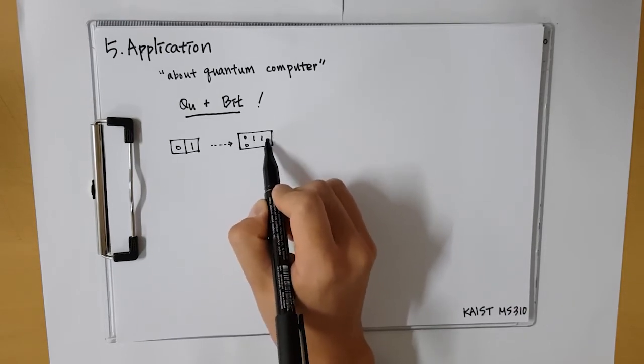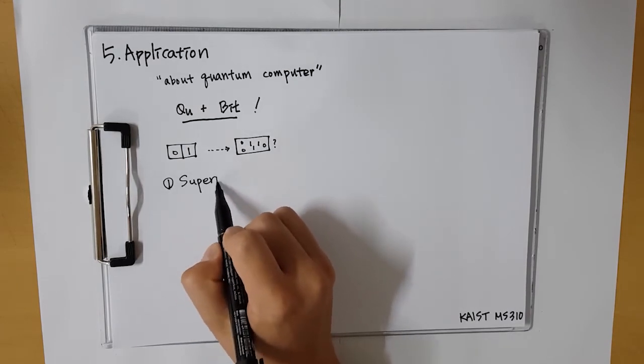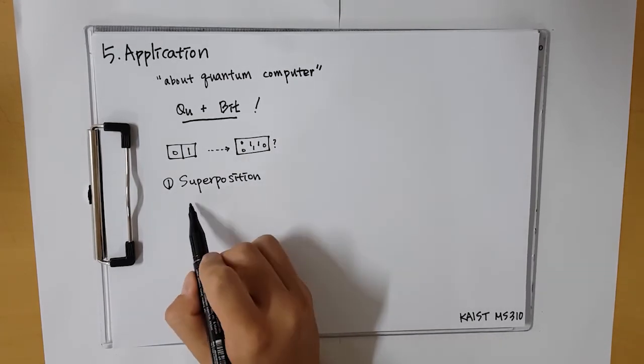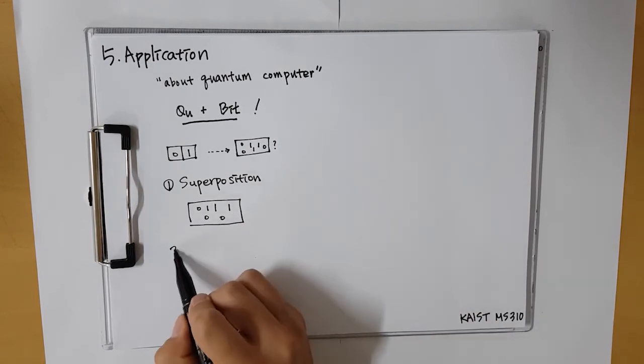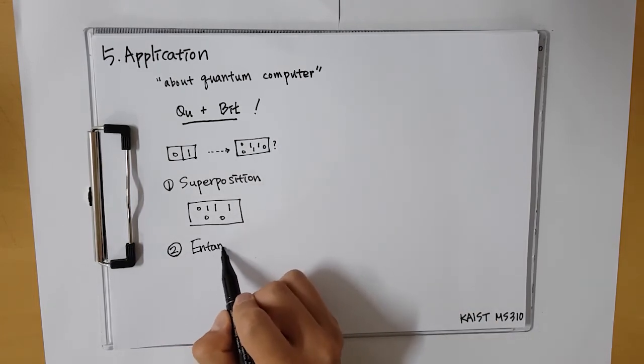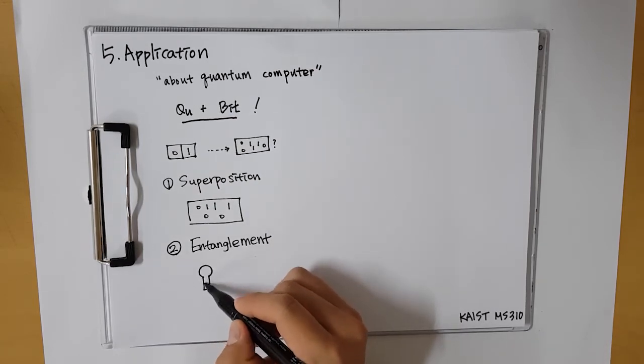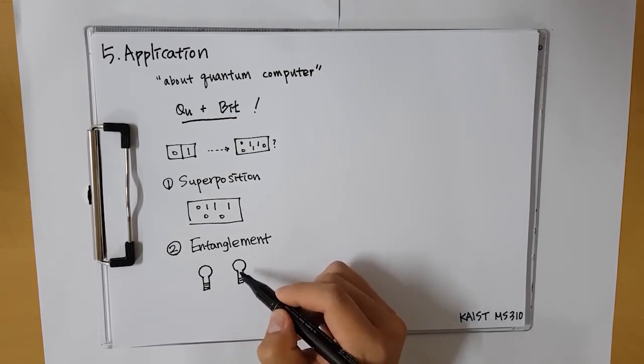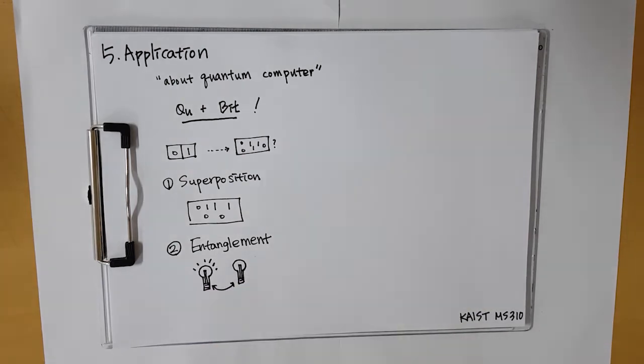Then what are superposition and entanglement? Superposition and entanglement are both quantum phenomena. Superposition is that deterministically not exact one but all stochastic states exist at the same time. Entanglement is a series of correlations that can exist between subsystems.